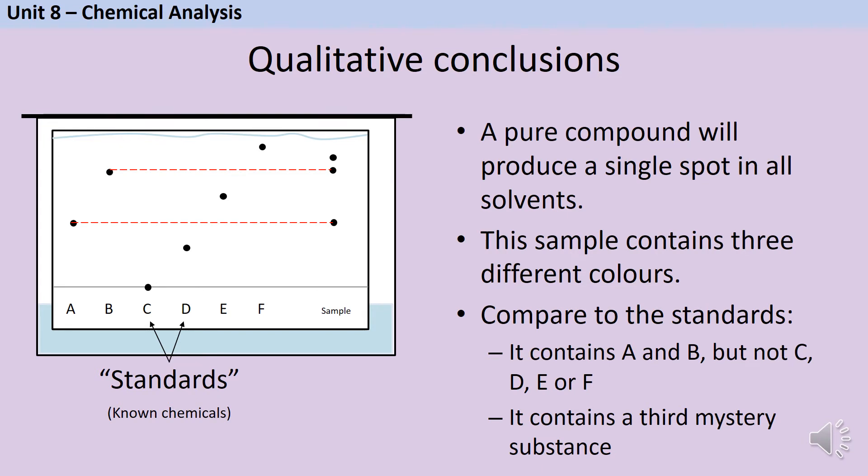So each of my six standards here are pure substances. When I run the chromatogram I just get one single dot. But my sample contains three different substances, three different colors.